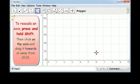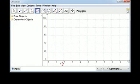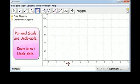And there we have from zero to one hundred on the y-axis, zero to ten here. This is an undoable operation.